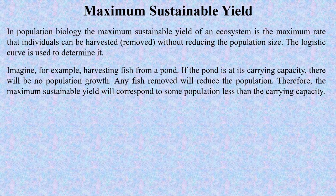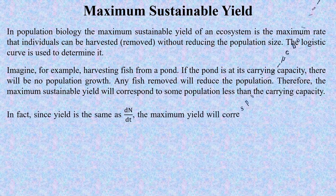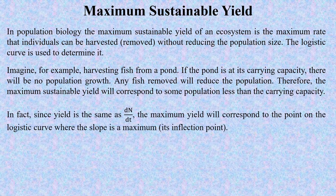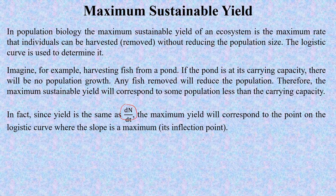Therefore, the maximum sustainable yield will correspond to some population less than the carrying capacity. The yield is the same as dn/dt — it is the slope. The maximum yield will correspond to the point of the logistic curve where the slope is maximum, that is its inflection point.